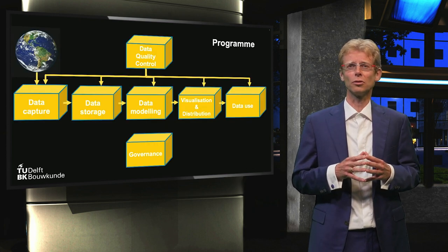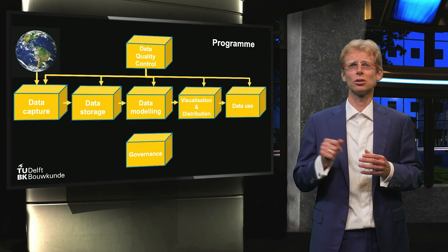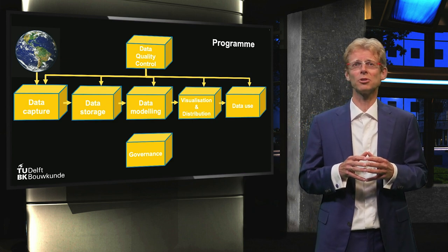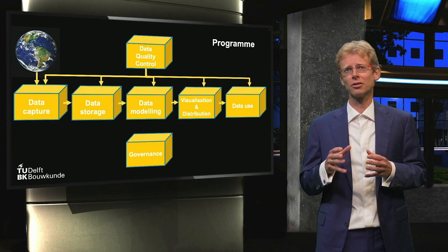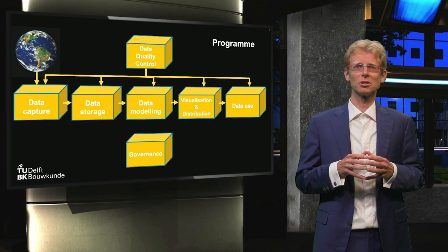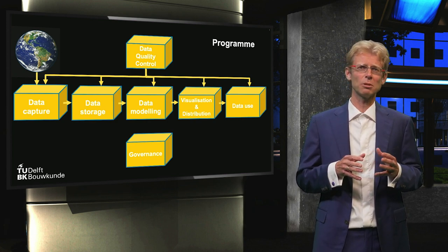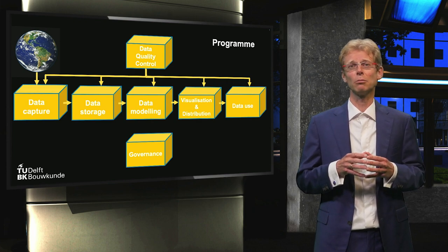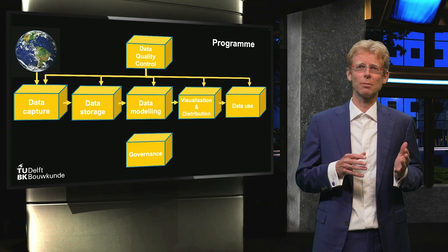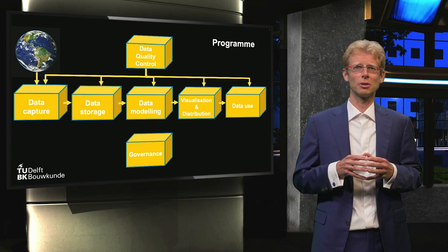Here you see a graphical overview of the steps you follow during the program. At the very end you can use the geographical information, but first you will have to capture and store the data. After that the data will be modeled. The fourth step is the data visualization and distribution. Only after a quality check has been performed for each step the data can be used. Together we call these steps the GeoInformation chain.